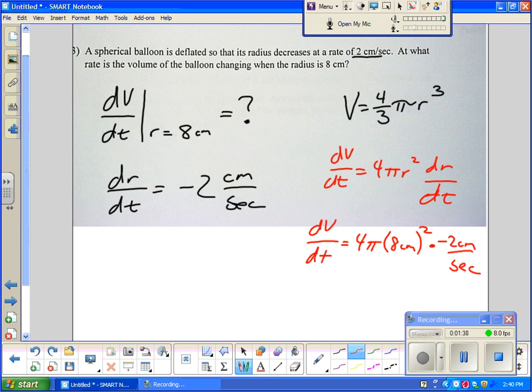So dV/dt equals 4 times 64 times negative 2. Yeah, negative 512π centimeters cubed per second. That's a lot. That's one and a half liters roughly, right? Negative one and a half liters per second is changing, because a thousand cubic centimeters is a liter.